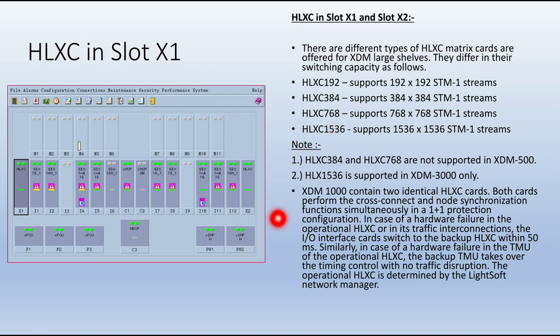The HTM 1000 contains two identical HLXC cards. Both cards perform cross-connect and node synchronization functions simultaneously in a 1+1 protection configuration. In case of a hardware failure in the operational HLXC or its traffic interconnection, the input-output interface cards switch to the backup HLXC within 50 milliseconds. In case of a failure in the TMU (timing management unit), the backup TMU takes over timing control with no traffic disruption.